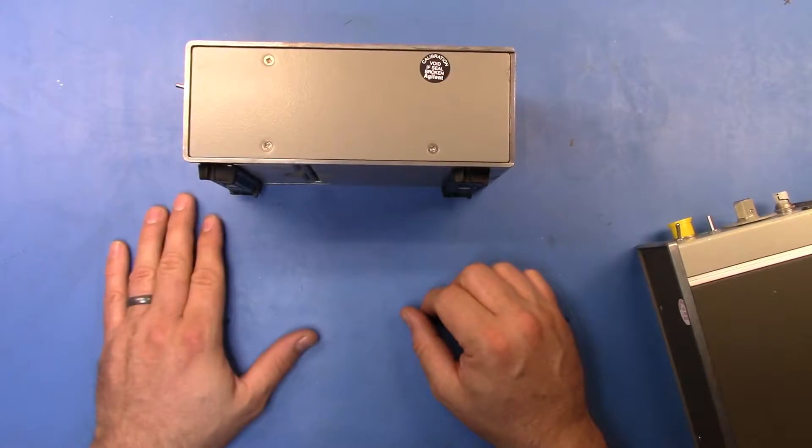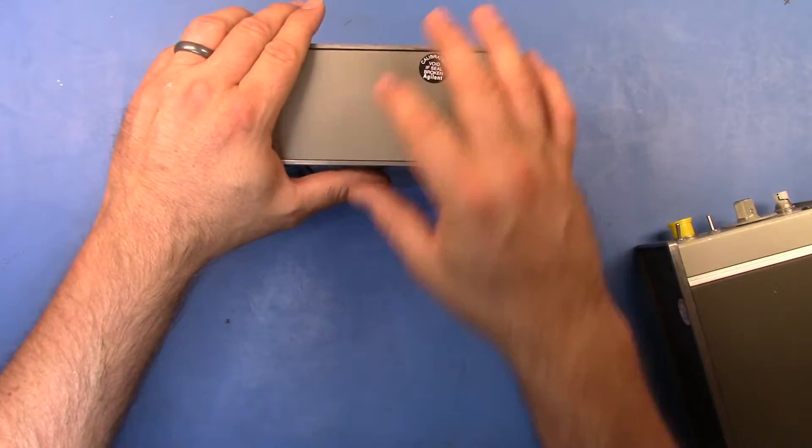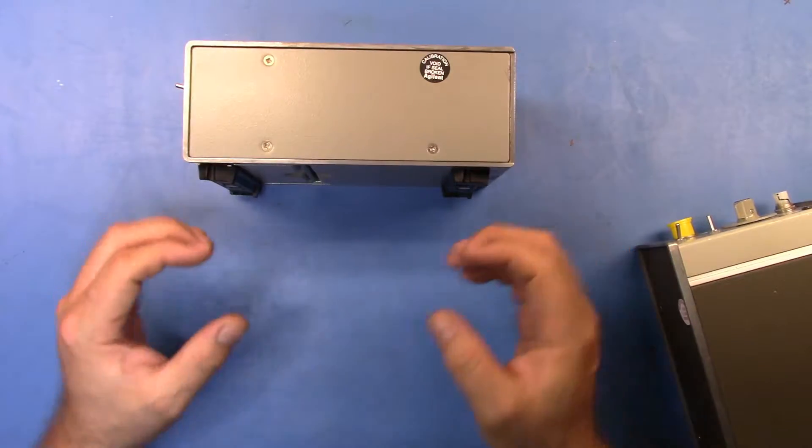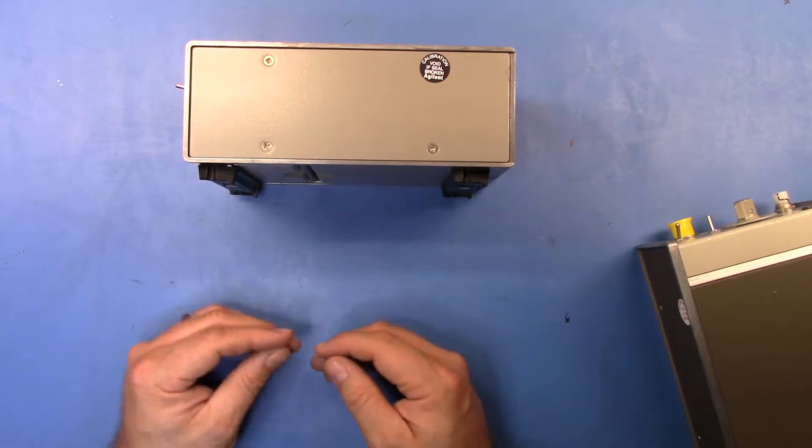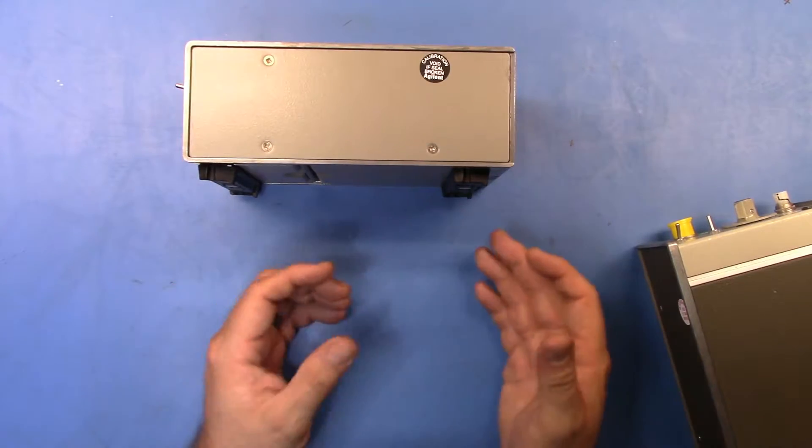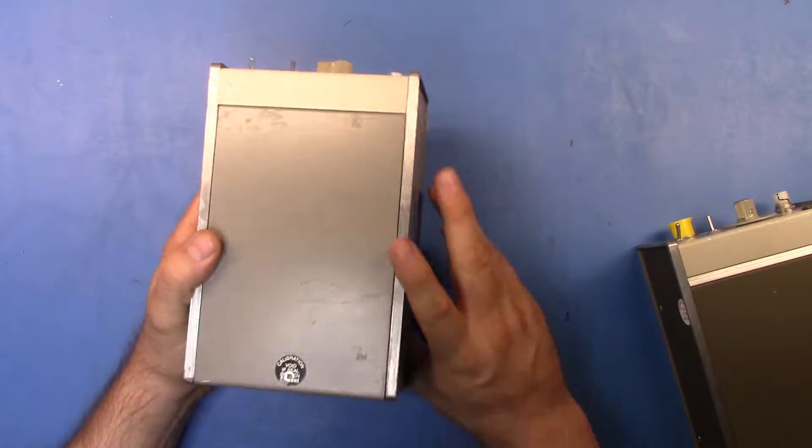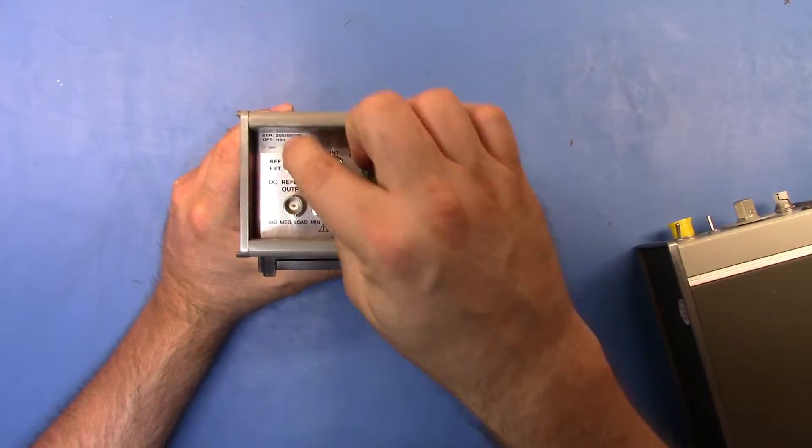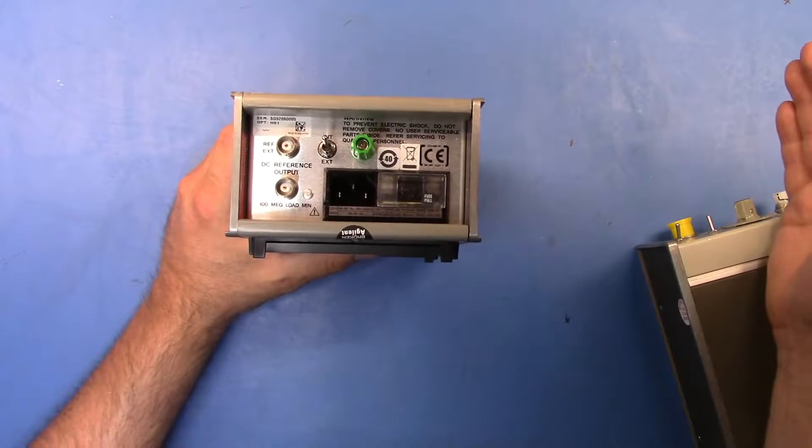Which is great, that's for calibrating the 435, 436, 437 meters. That's perfectly okay when you start getting into the newer models, the EPM range, and in fact the meter that I bought just recently which was the E4418B. These, that internal reference is no longer accurate enough.